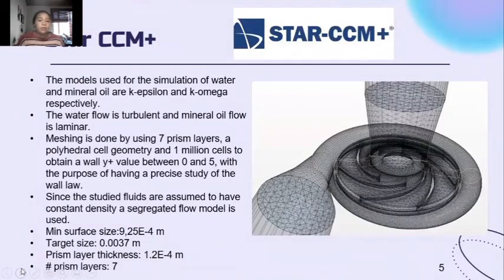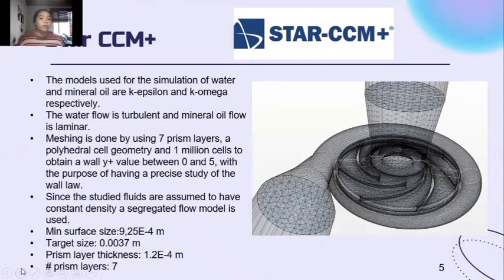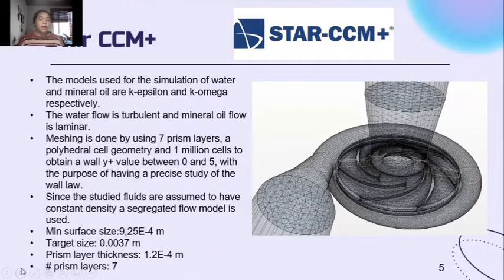For Star CCM+, this is the mesh we designed. For the simulation, the models used were k-Epsilon and k-Omega: k-Epsilon for water and k-Omega for the mineral oil. As mentioned before, water flow is turbulent and mineral oil flow is laminar. Meshing is done by using 7 prism layers, a polyhedral cell geometry, and 1 million cells to obtain a wall Y-plus value between 0 and 5, with the purpose of having a precise study of the wall law.